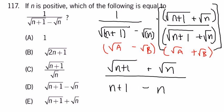And of course, N plus 1 minus N is just 1. So, the end result is the square root of N plus 1 plus the square root of N.